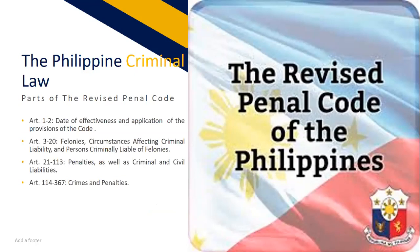The parts of the Revised Penal Code are: Articles 1 and 2 — the date of effectiveness and application of the provisions of the code; Articles 3 to 20 — felonies, circumstances affecting criminal liability, and persons criminally liable for felonies; Articles 21 to 113 — penalties as well as criminal and civil liability; and Articles 114 to 367 — crimes and penalties.